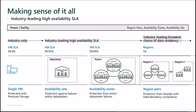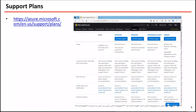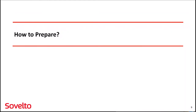Another important picture combines everything from a single virtual machine to availability sets, availability zones, and region pairs, and shows how the SLA changes as you go upward. This is something you should definitely review before the exam because there will definitely be a question about SLAs and how availability sets compare to availability zones. Also, the support plans were previously a hard topic for me, but since they've been removed from this exam, we don't have to worry about them at all.